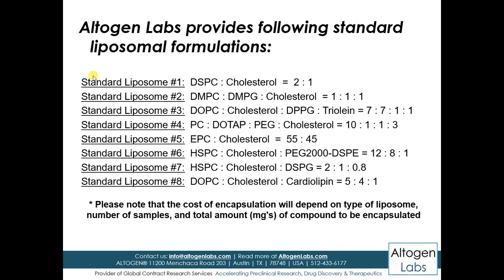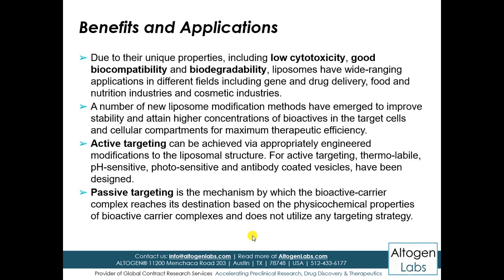These are the different ratios — for example, these are standard liposomal formulations: DSPC to cholesterol at a 2:1 ratio. These are the standard liposomal formulations. DMPC and DMPG to cholesterol at a 1:1:1 ratio. The cost of encapsulation depends on the type of liposome and the number of samples, plus the total milligrams of compound to be encapsulated.